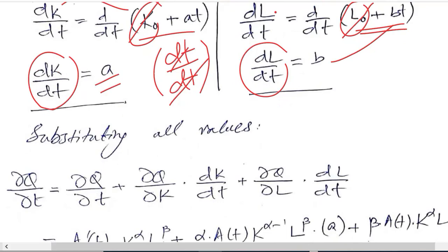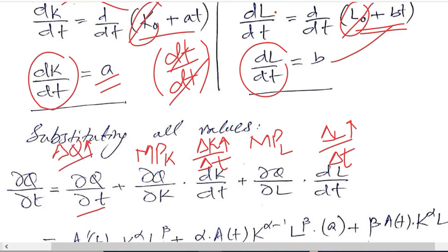Now substituting all of these values, this is MPK, the famous notations from economics, MPL. This is change in capital, improvement actually, due to time. And this is change in labor, improvement in labor due to time. Whereas this is also something that is change in output over time. So the values are there.